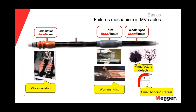In terms of the failure mechanisms for medium voltage cables, we should distinguish between local issues and global issues. Local issues will affect only a small portion of the insulation or some accessories in the cable — it could be splices or terminations — but local issues will not be spread along the entire segment of the cable. Mainly, local issues are related to workmanship issues or manufacturing defects.